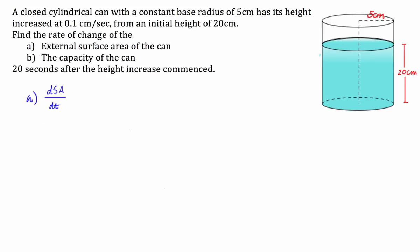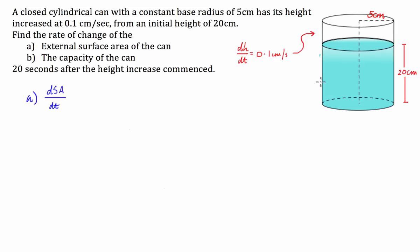We also have in this question that the height is increasing at 0.1 centimetres per second. So we can say that DH/DT is equal to 0.1 centimetres per second. That's this increase here.